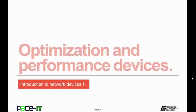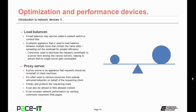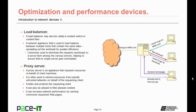Now let's talk about optimization and performance devices. We will begin by talking about the load balancer. A load balancer may also be called a content switch or content filter. It's a network appliance used to load balance between multiple hosts that contain the same data, spreading out the workload for greater efficiency. They're commonly used to distribute requests or workload to a server farm among the various servers, helping to ensure that no single server gets overloaded with work requests.